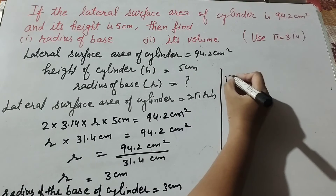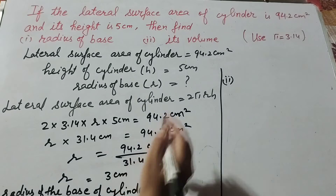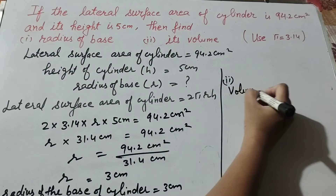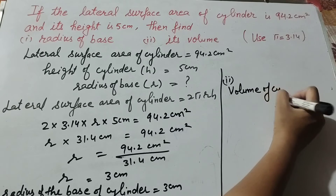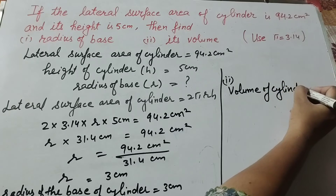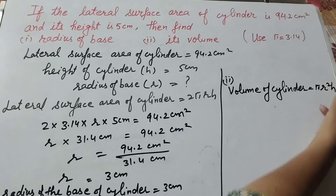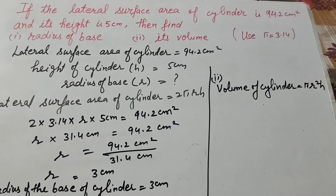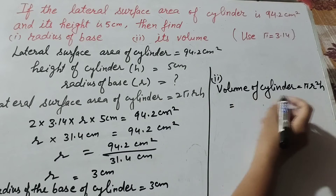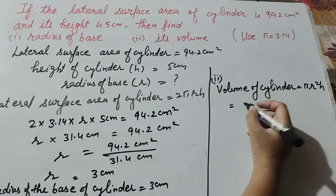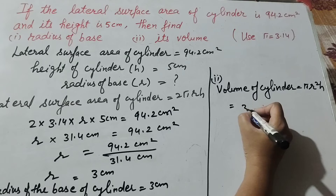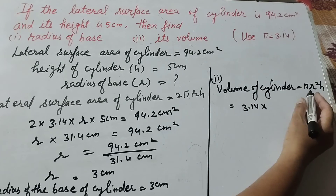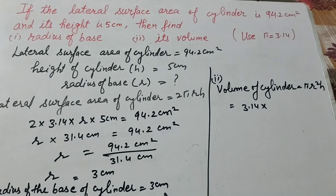Now we move to the second part — we find its volume. Volume of cylinder: we know the formula to find the volume of a cylinder, which is π r² h.